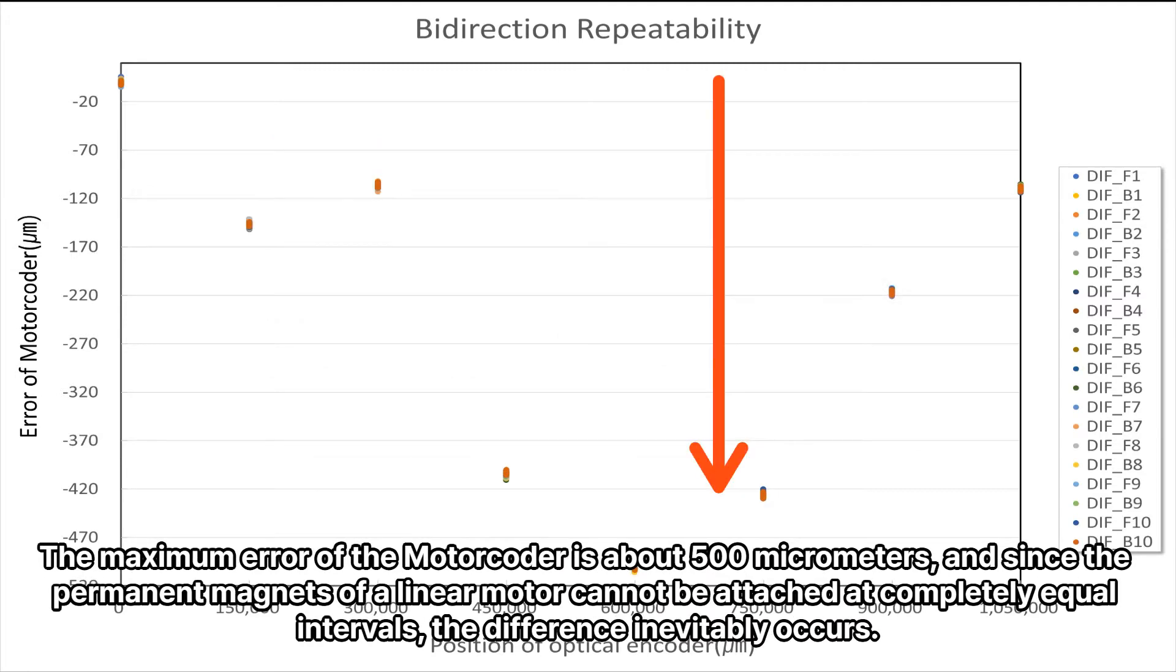The maximum error of the motor coder is about 500 micrometers, and since the permanent magnets of a linear motor cannot be attached at completely equal intervals, the difference inevitably occurs.